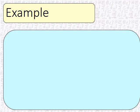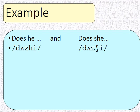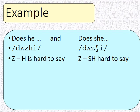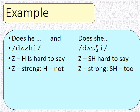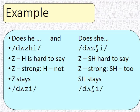Here's an example of how these changes in words can actually affect meaning: 'does he' and 'does she.' 'Does' and 'he' would be 'does-he.' Z is hard to say; H is not strong. Z and SH are both strong. So in 'does he,' the Z stays and it makes 'duzzy.' In 'does she,' the SH stays and it becomes 'duzshe.' Now you've got the difference between 'does he' and 'does she' turning into 'duzzy' and 'duzzshe' in natural speech. Does she like to eat watermelon? Does he like to eat apples?